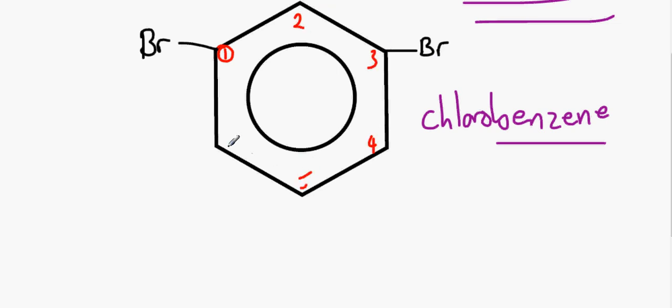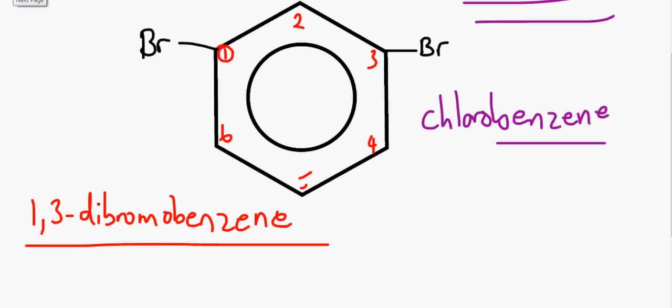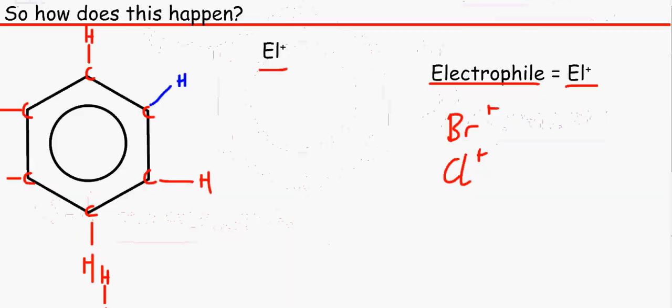So let's number it like this. Three, four, five, six. We can see that this is one, three, dibromobenzene. Keep on practising that if you kind of get it.